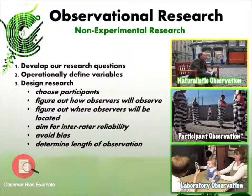The steps for doing observational research are as follows. First, develop a research question so you can identify variables and create a hypothesis. Second, operationally define those variables — know exactly what you're looking for and communicate that clearly to everyone doing the observations, so you all have a clear understanding of what to record and are all recording the same behaviors.